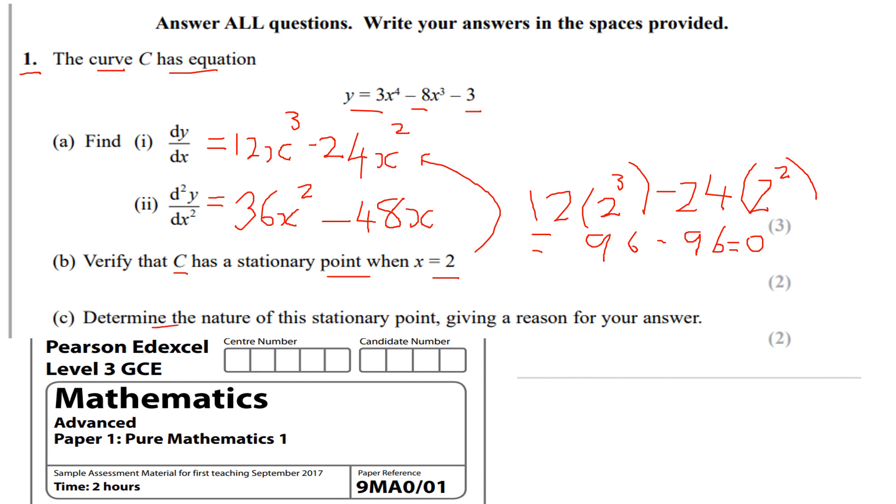Part C, determine the nature of this stationary point, giving a reason for your answer. So we substitute in x equals 2 into the second derivative to find if it's bigger than 0, less than 0, or equal to 0. If it's equal to 0, then it's a point of inflection. If it's less than 0, then it's a local maxima, and then if it's greater than 0, then it's going to be a local minima.